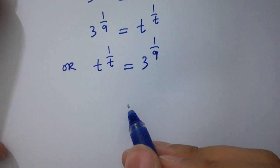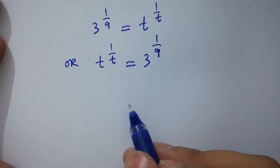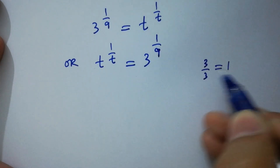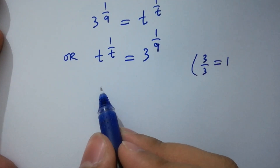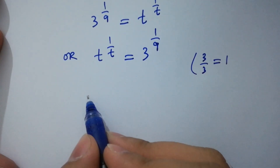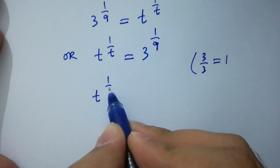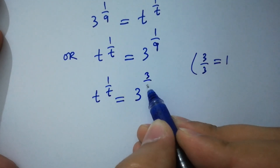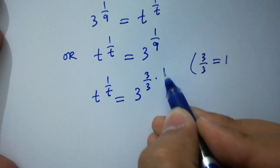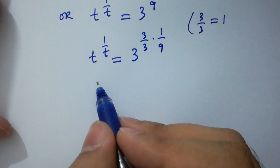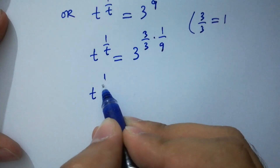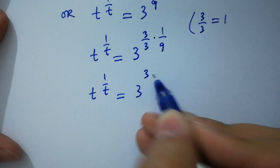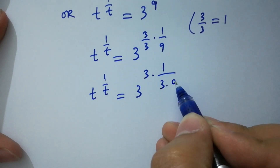I hope you understood. In the next step, as we know 3 over 3 equals 1, this step is the same as t to the power 1 over t equals 3 to the power 3 over 3, times 1 over 9. Simplifying, t to the power 1 over t equals 3 to the power 3 times 1 over 3 times 9.